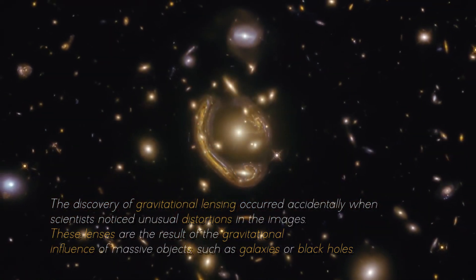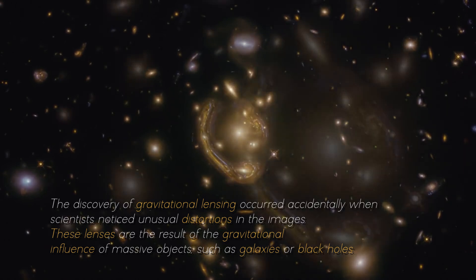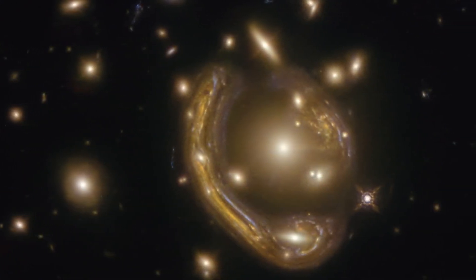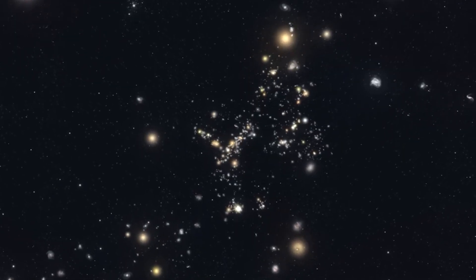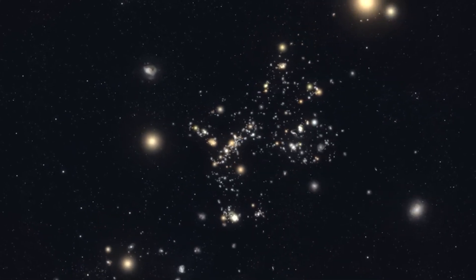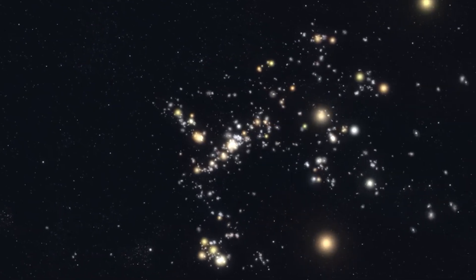The discovery of gravitational lensing occurred accidentally when scientists noticed unusual distortions in the image. These lenses are the result of the gravitational influence of massive objects such as galaxies or black holes, bending the light from smaller, more remote objects in the background of an image.